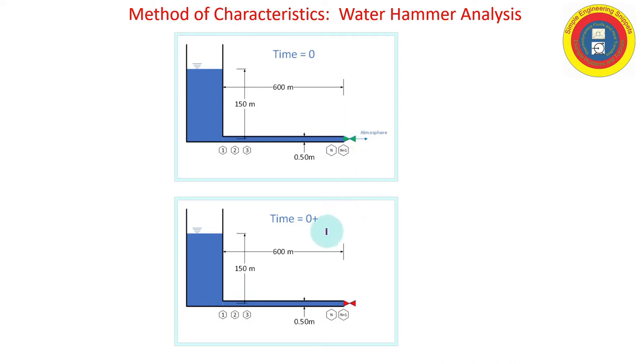At time equals zero plus, we shut the valve immediately, kind of an academic problem. And so, the full Joukowsky pressure wave is developed, which will travel up the pipe, decreasing the flow and increasing the head.